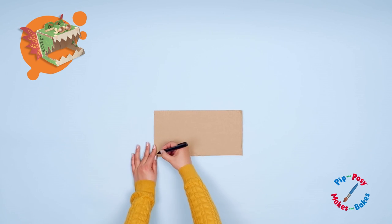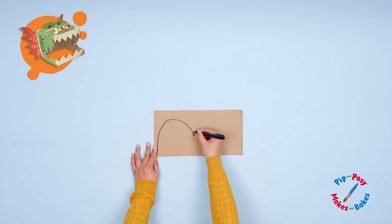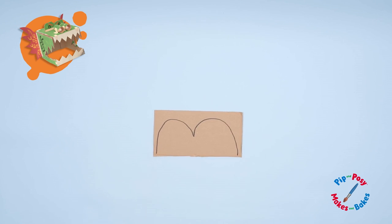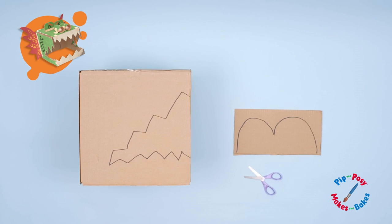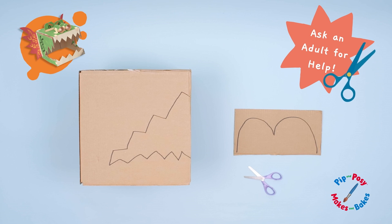The dragon also needs some eyes. Take one of the shorter flappy bits of cardboard we cut at the beginning and draw an M shape. Use scissors to cut the mouth and the eyes of the dragon. Remember, always ask an adult to help you with scissors.